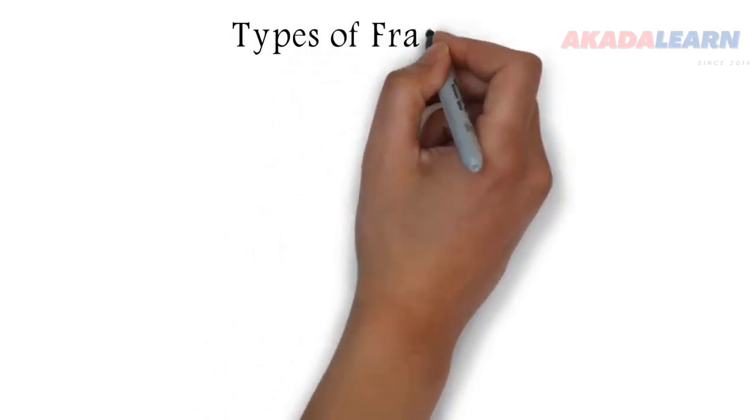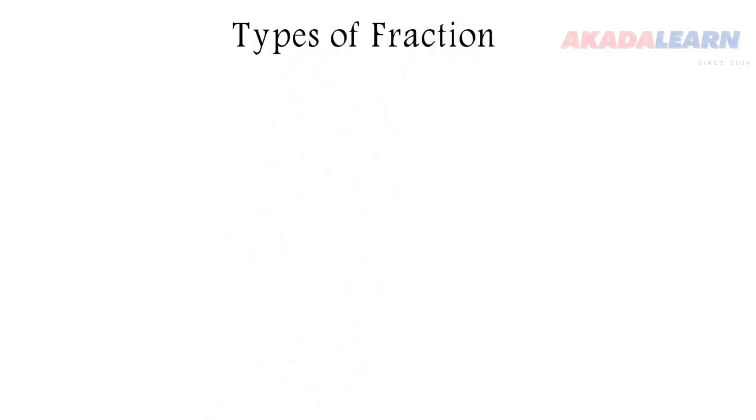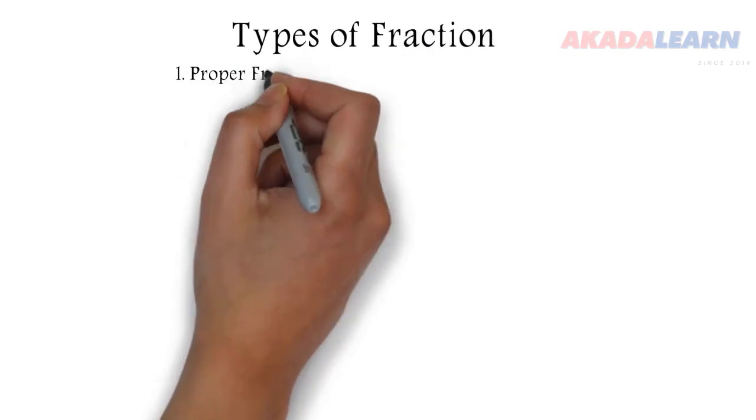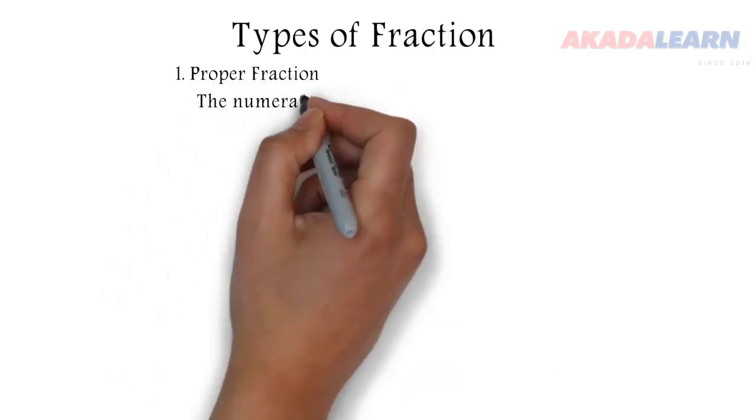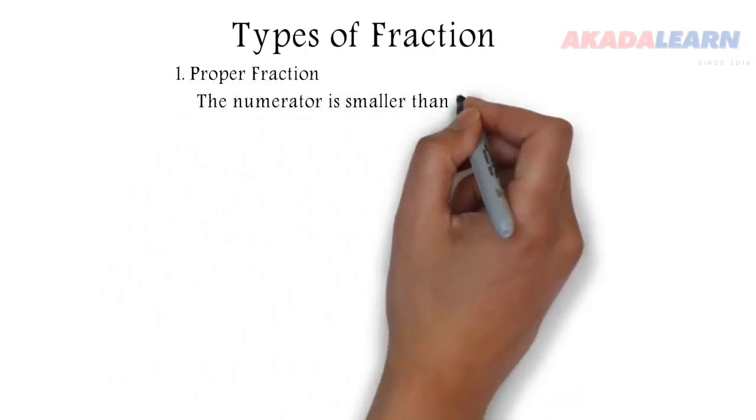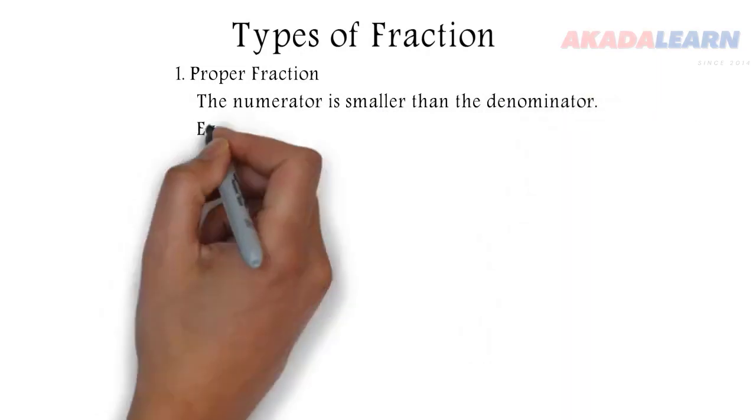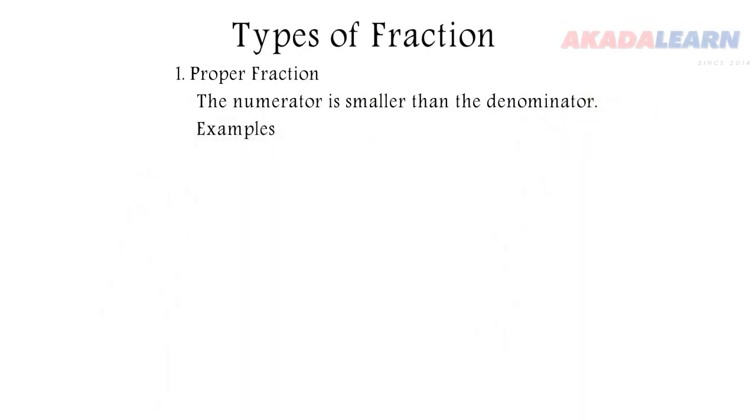Now we dive ahead to types of fraction. The first type of fraction is called proper fraction. Proper fraction is simply a type of fraction where the numerator is smaller than the denominator. Examine those examples.